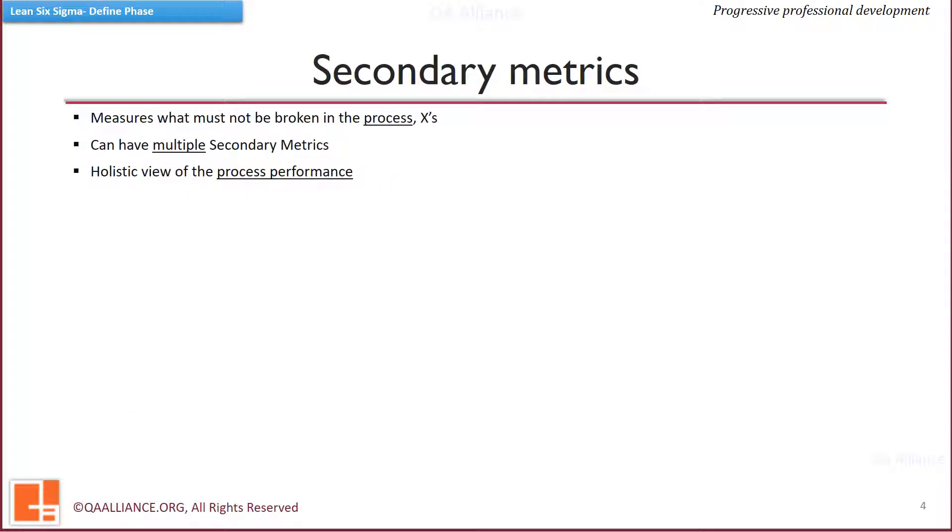Let us see now what is a secondary metric. While a primary metric measures what needs to be fixed, the secondary metric measures what must not be broken. It gives a holistic picture of the ongoing process.